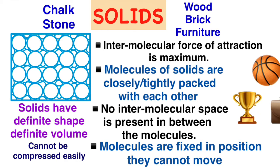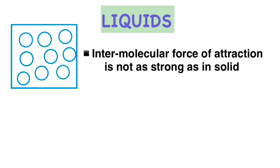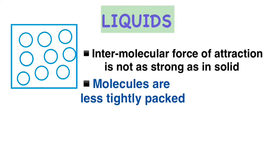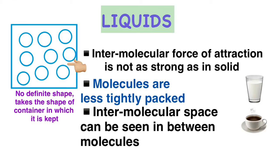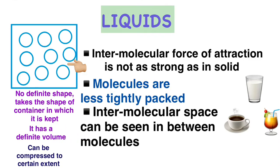In liquid, the intermolecular force of attraction is not that strong as it is in the solids. That is why the molecules are less tightly packed and we can see intermolecular space between the molecules. Liquids do not have a definite shape. They take the shape of the container in which the liquid is kept. However, they have a definite volume. Liquids can be compressed to a certain extent. Oil, milk, and water are examples of liquids.